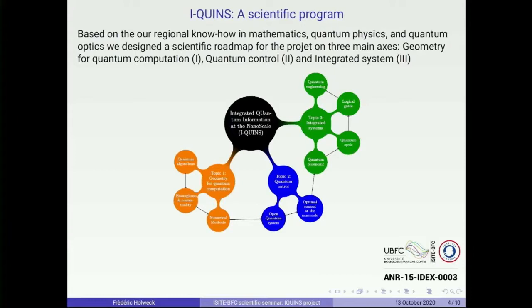This is what topic two of our project addresses: quantum control. You have to imagine that quantum systems are very delicate and fragile objects, essentially because of the environment. You need a strong theoretical physics background to describe the possible interactions and how to manipulate quantum states. Finally, over the last two days of these UBFC meetings, we have seen that UBFC has important skills in quantum optics, and we hope in this project to demonstrate that quantum plasmonics and quantum optics are very good candidates to support quantum information and the development of corresponding quantum technology.